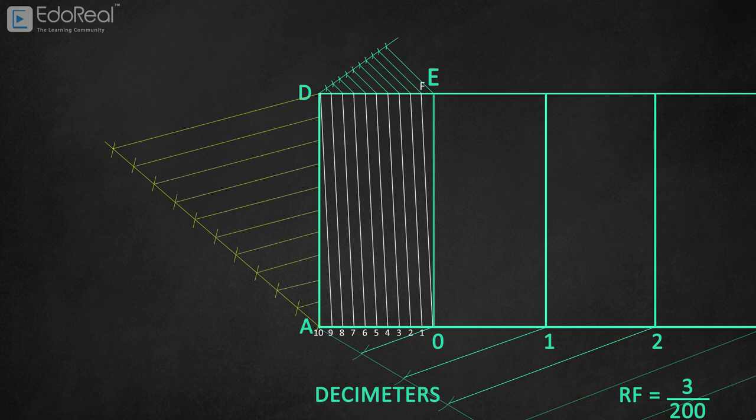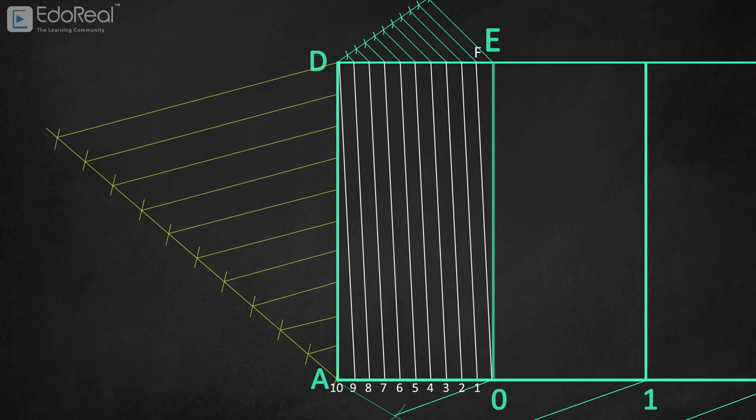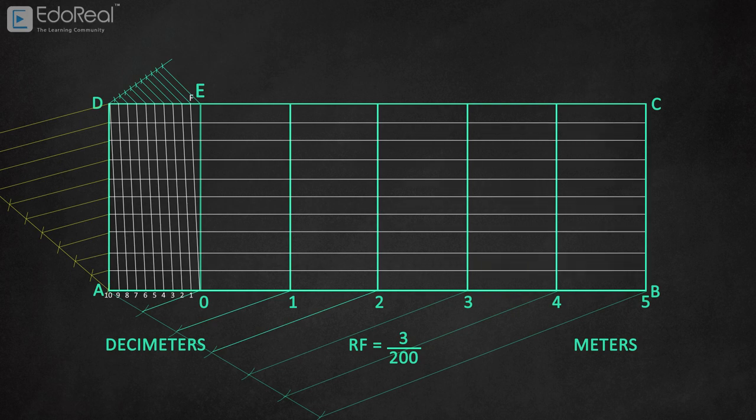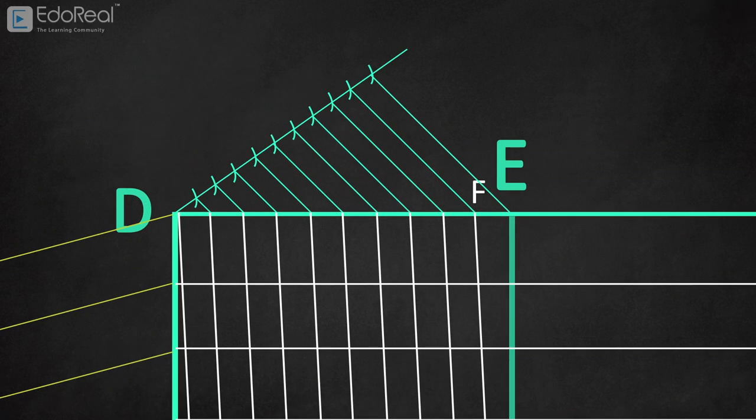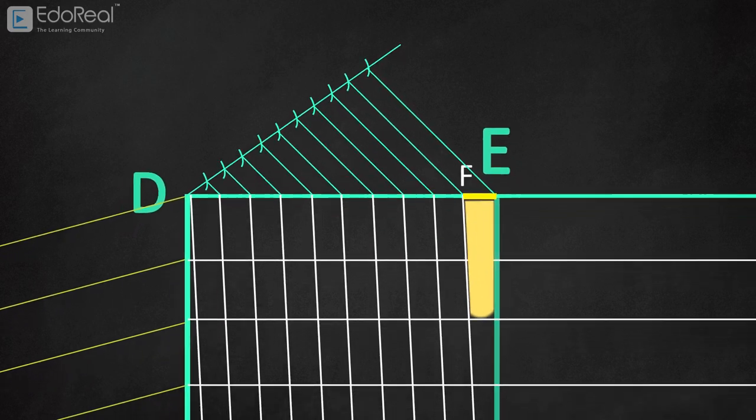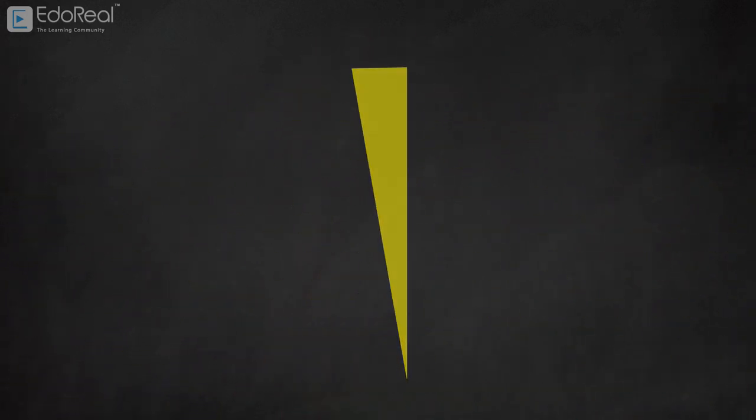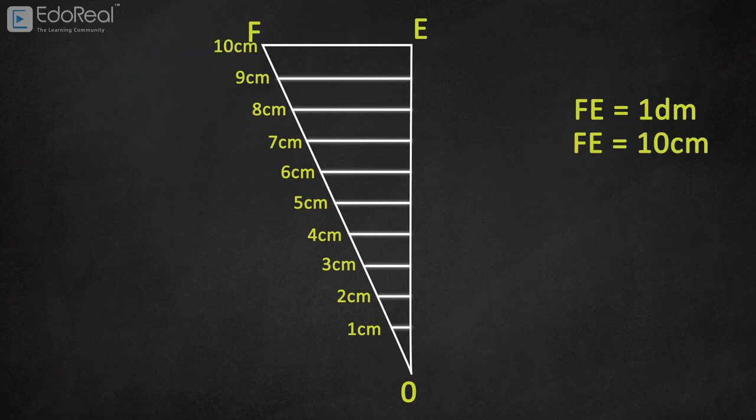Here we can see that the left portion got divided into 10 equal parts. Now draw horizontal lines from the intersection points. Then we can see how the 1 decimeter section, that is FE, has got divided into 10 equal parts. We know that FE is 1 decimeter, that is 10 centimeters.